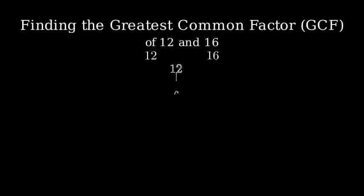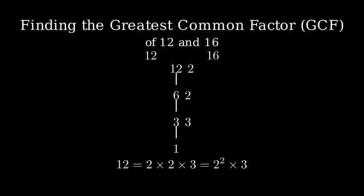Let's start with 12. To find its prime factorization, we'll divide by prime numbers, starting with the smallest prime that divides evenly into 12. 12 divided by 2 equals 6, 6 divided by 2 equals 3, 3 divided by 3 equals 1. So 12 equals 2 times 2 times 3, or 2 squared times 3.